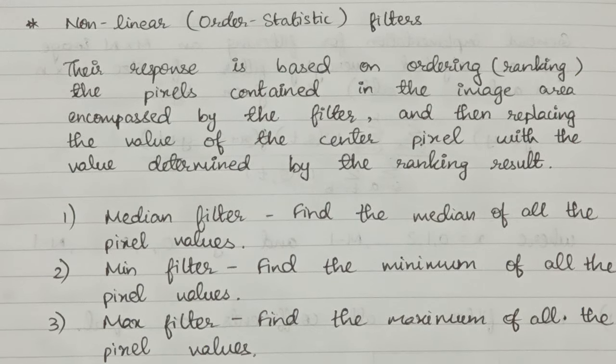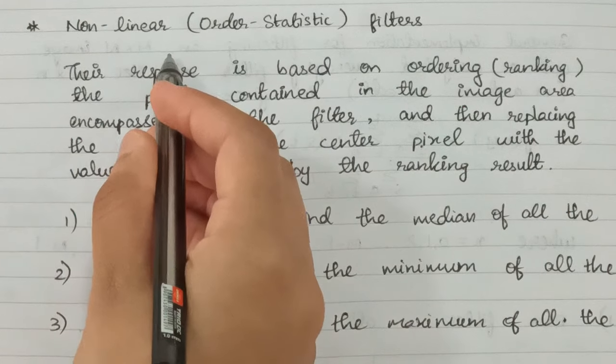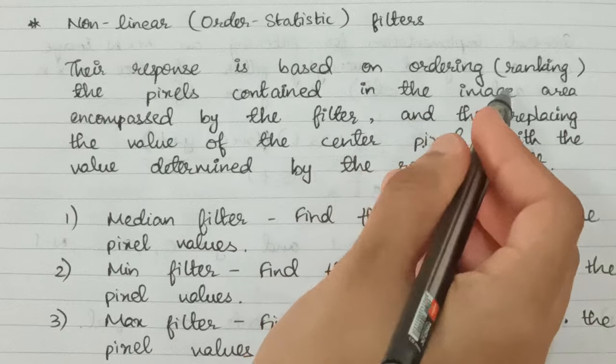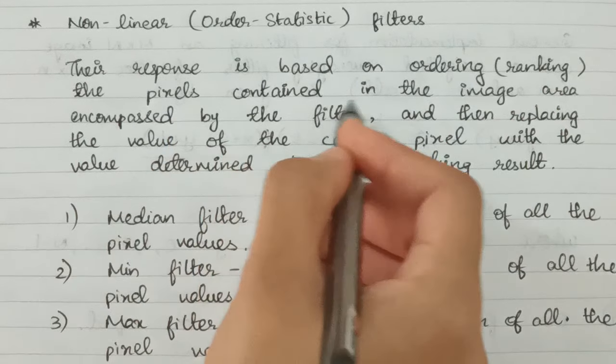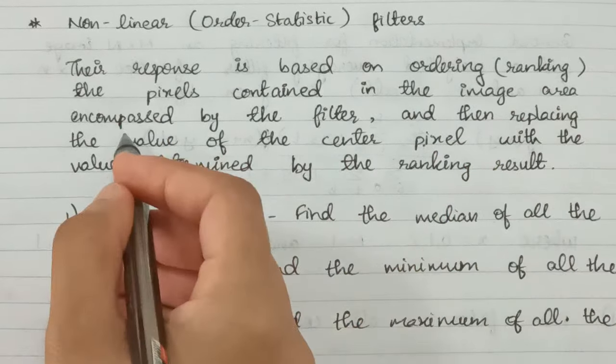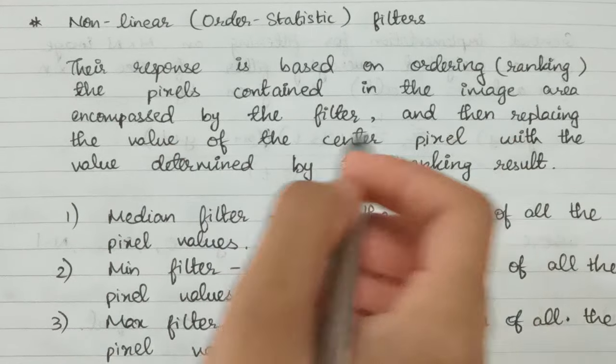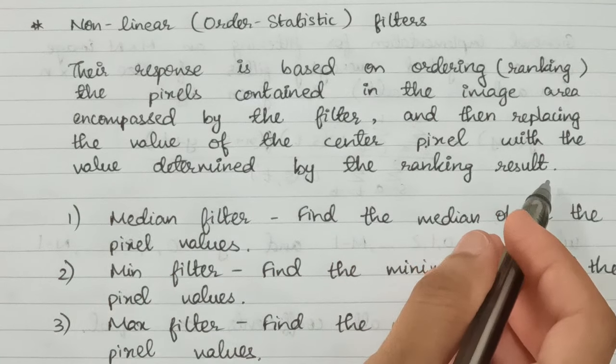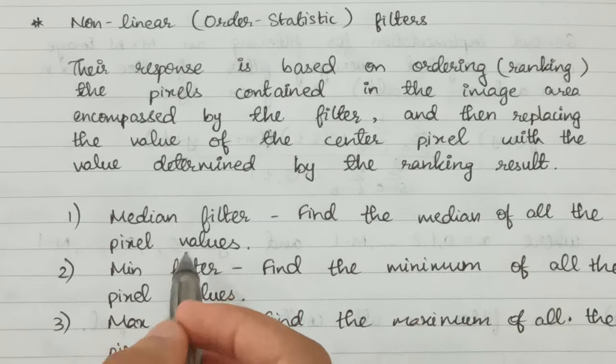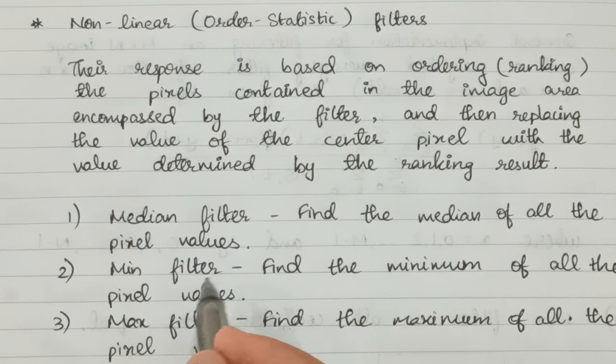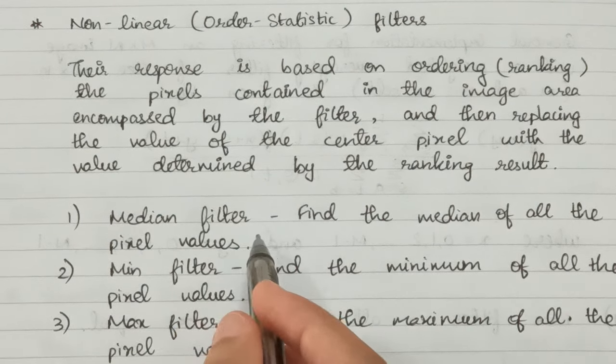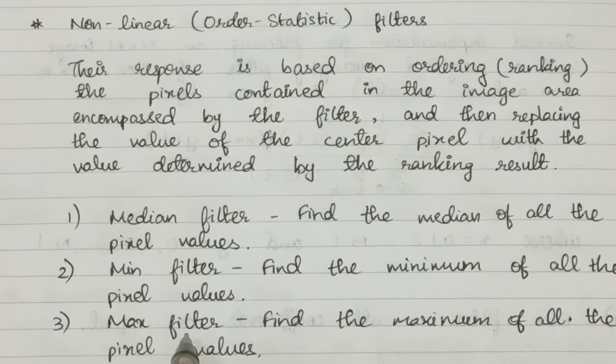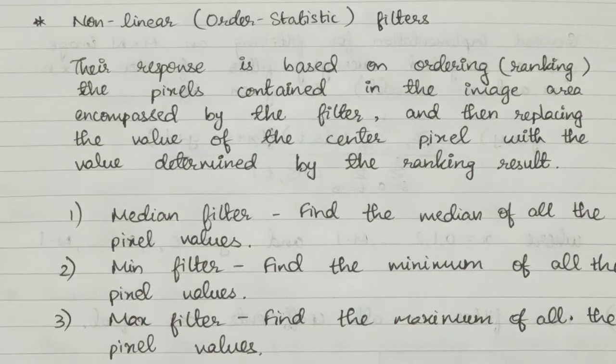The next type of filters are nonlinear, also known as order statistic filters. Their response is based on ordering or ranking of the pixels contained in the image area encompassed by the filter, and then replacing the value of the center pixel with the value determined by the ranking result. The different types of filters here are median filter, min and max filters. In median we find the median of all the pixels, in min filter we find the minimum value, and in max filter we find the maximum value of all the pixels.